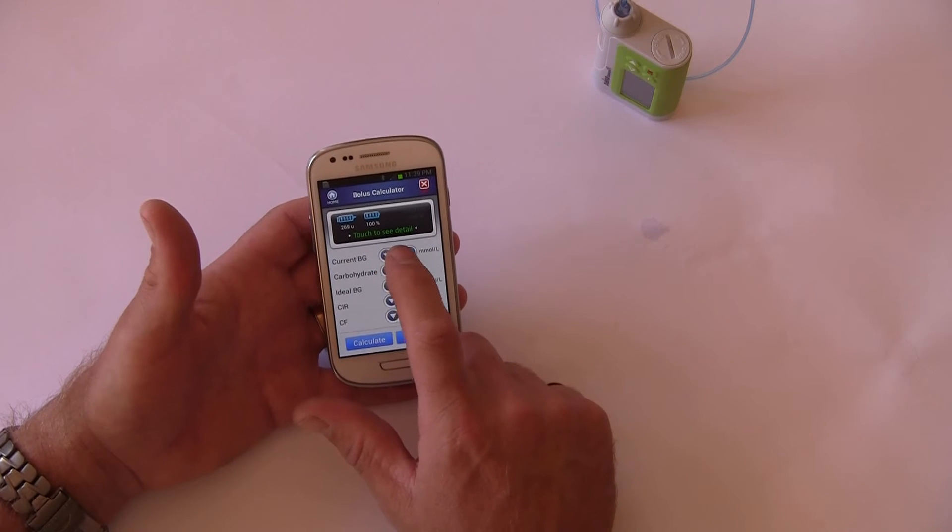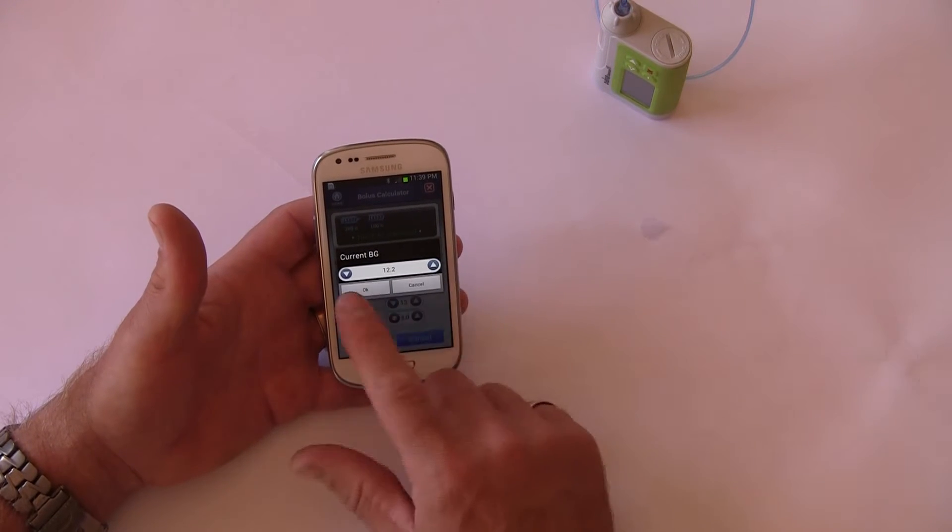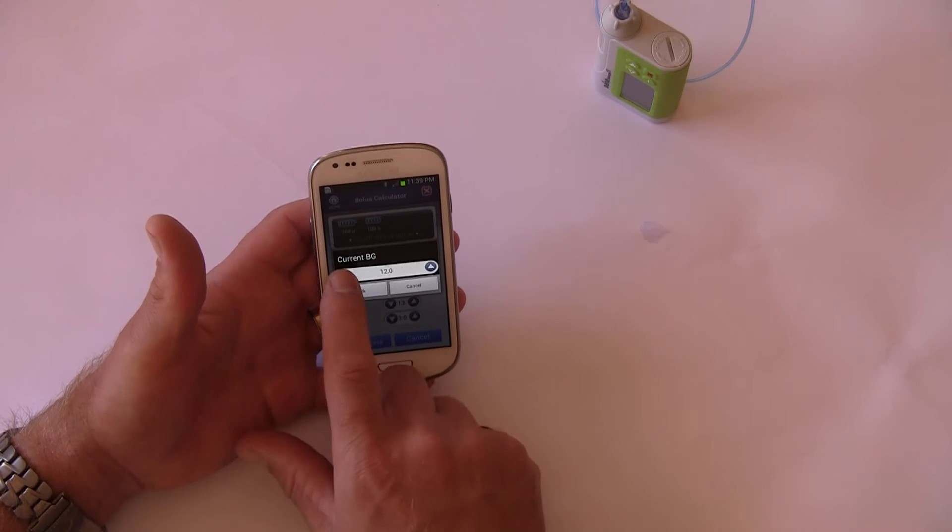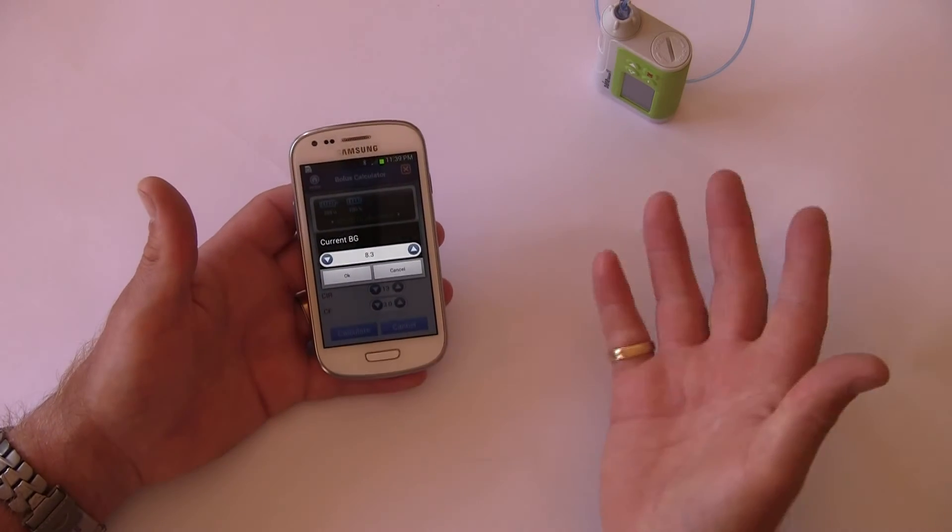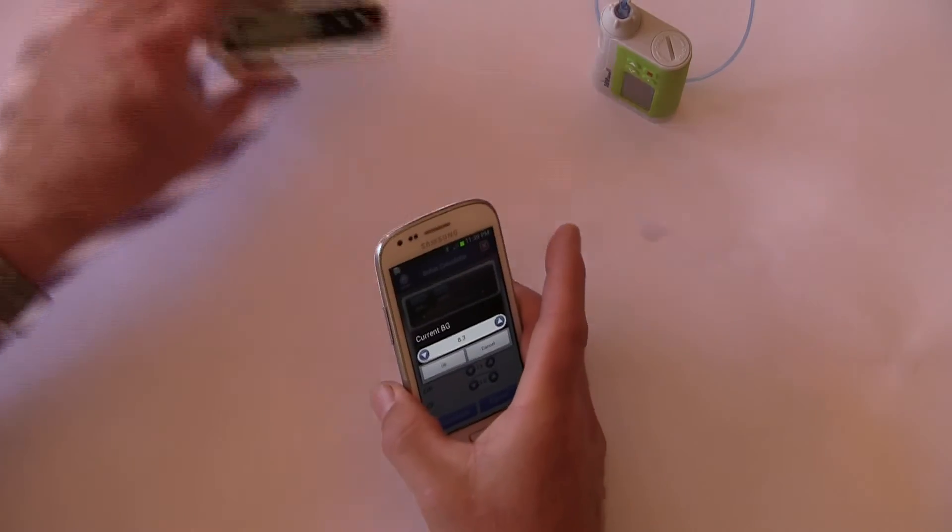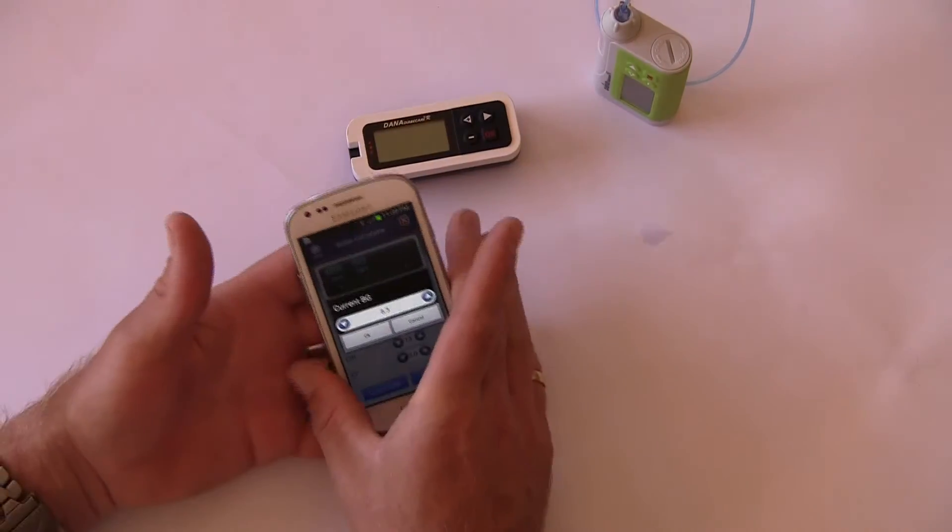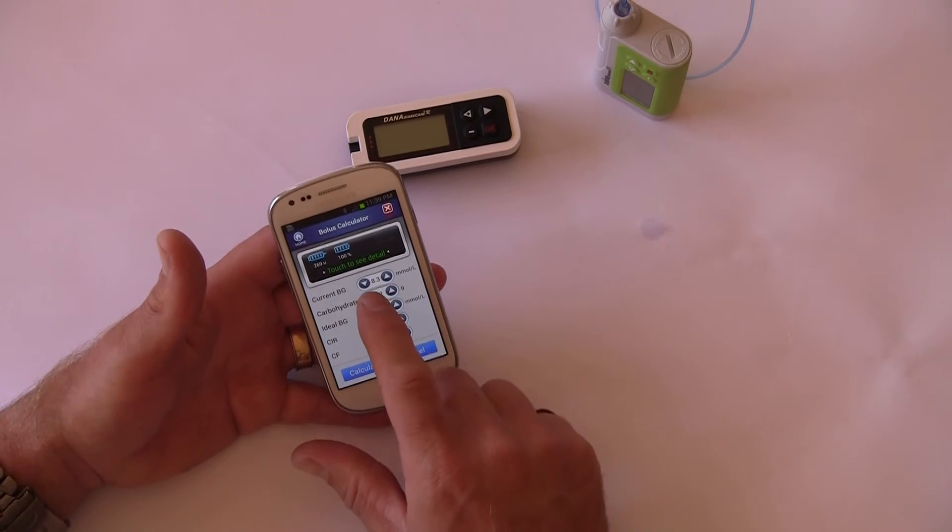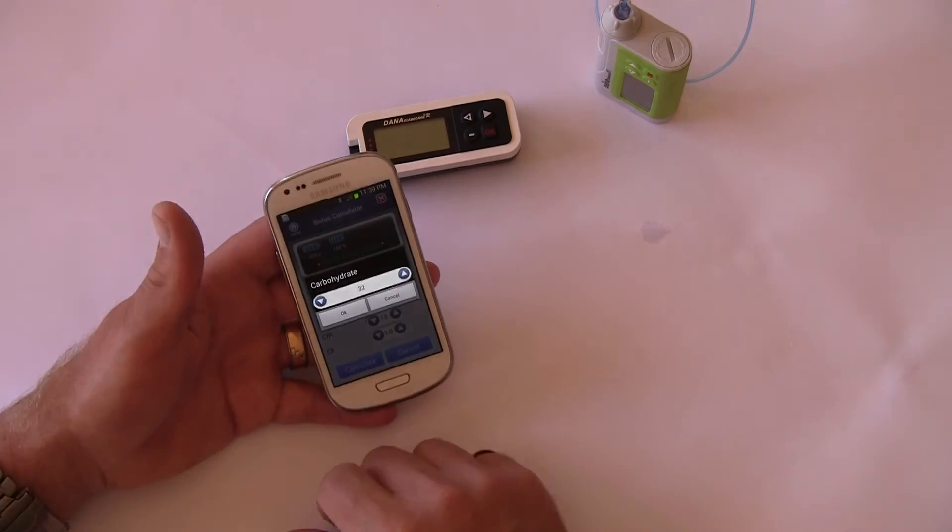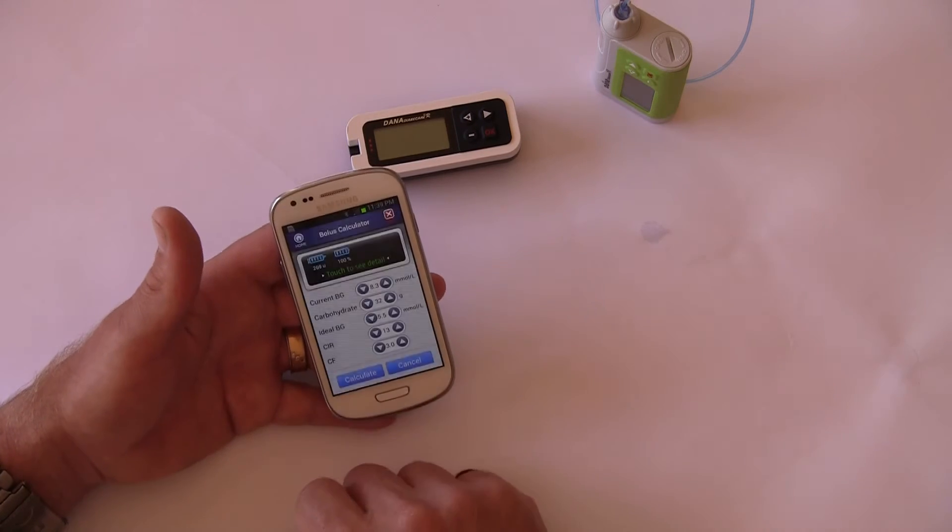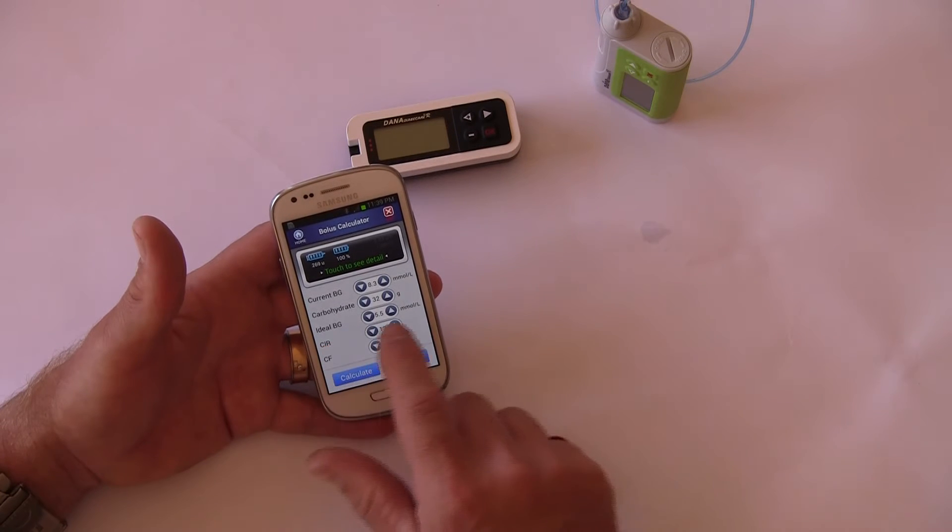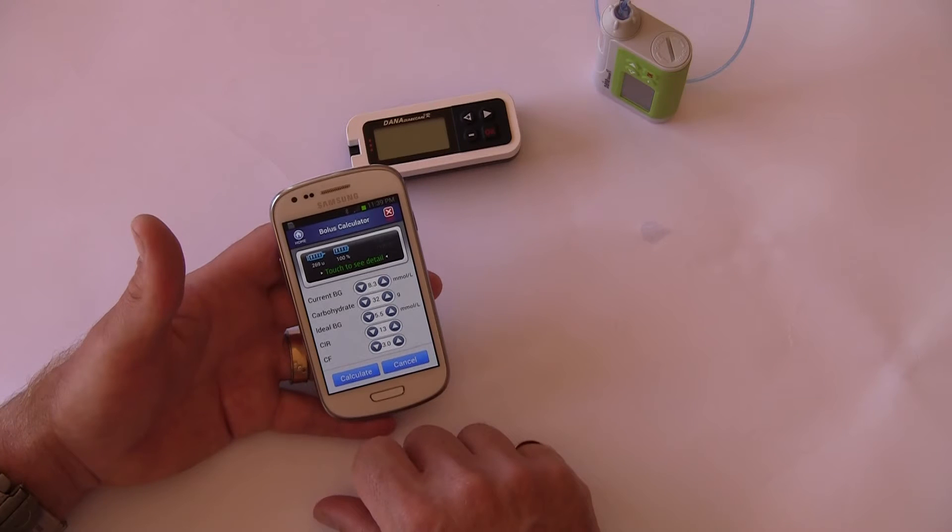We might wish to adjust our current BG. We're not currently 12.2, which was perhaps the last test. We're going to change that down to the current BG we may read from a CGM device or blood glucose meter, so the current BG might be 8.3. Carbohydrate: 32 grams sounds about right for a small snack or sandwich at the cafe. My target BG is 5.5, my carb-to-insulin ratio is 1 unit per 13 grams, and my correction factor is 1 unit per 3 millimole changes.